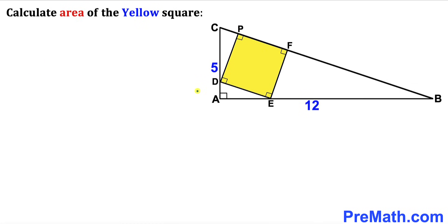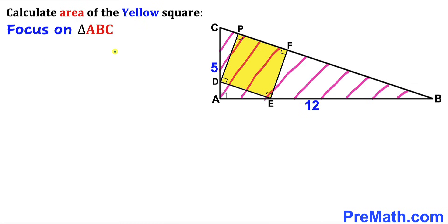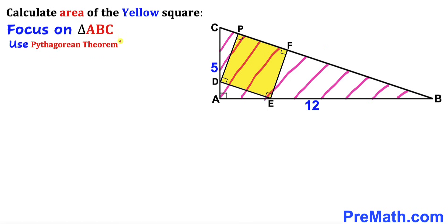Let's go ahead and get started. Here's our very first step: let's focus on this big right triangle ABC. We know its side lengths are 12 and 5, and this third side length is unknown. So therefore we are going to apply the Pythagorean theorem.